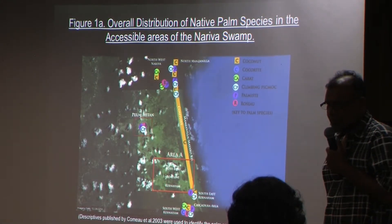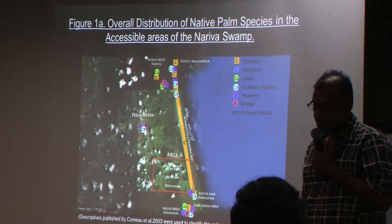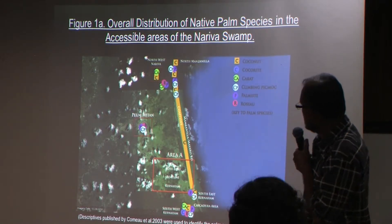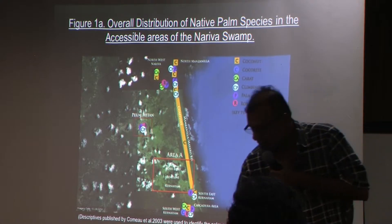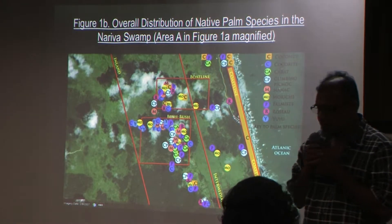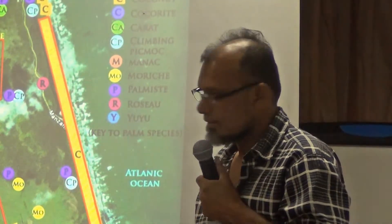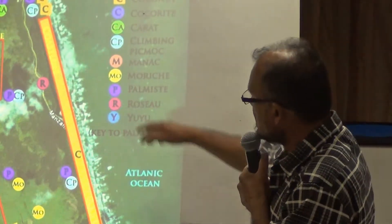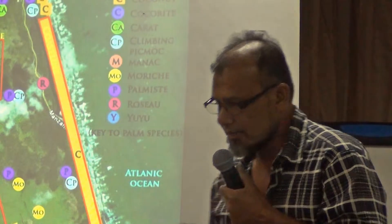This gives an idea of the distribution of the palm species within the Nariva Swamp. We have the coastline with the coconut shown in yellow. This is the overall view of where most of the palm species were distributed — inland within the Bush Bush area, the intermediate area, and the coastline area. This line of coconut is very important and is highlighted here.